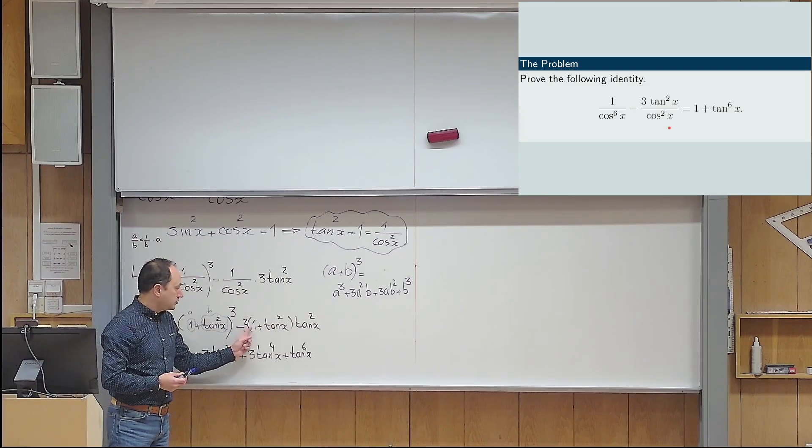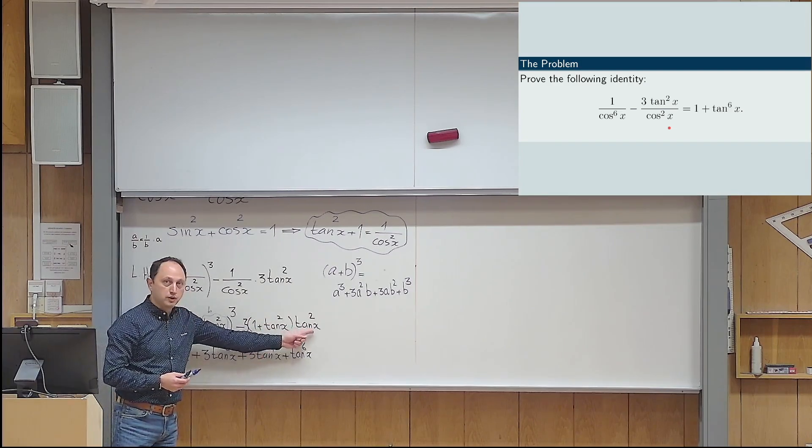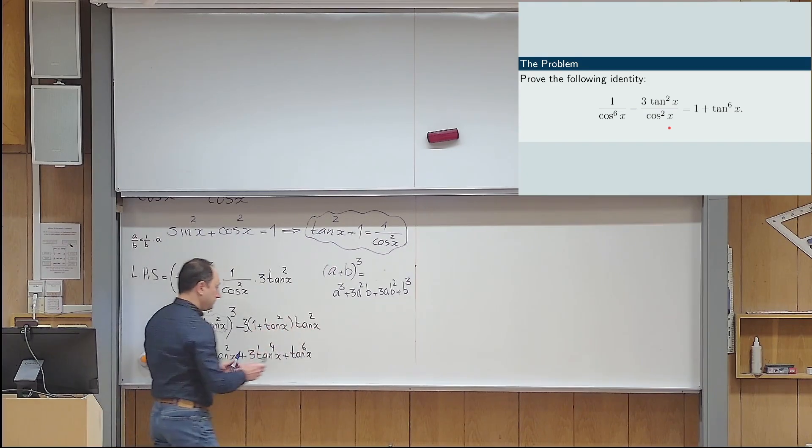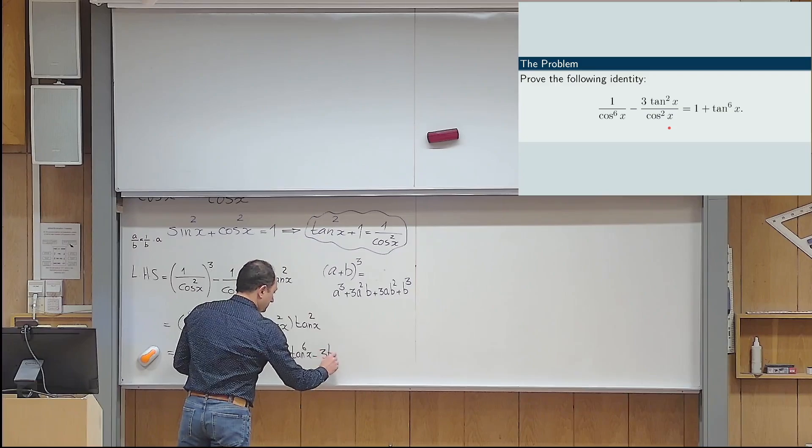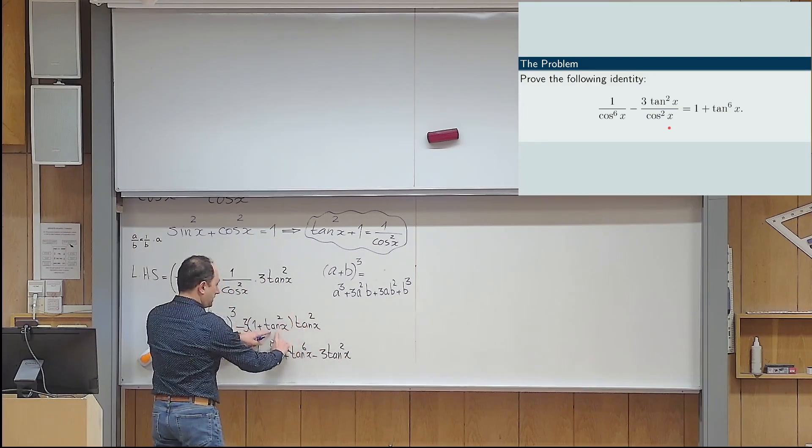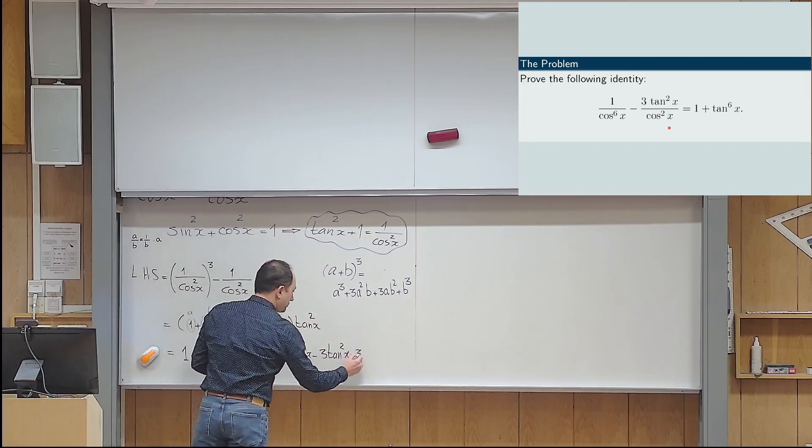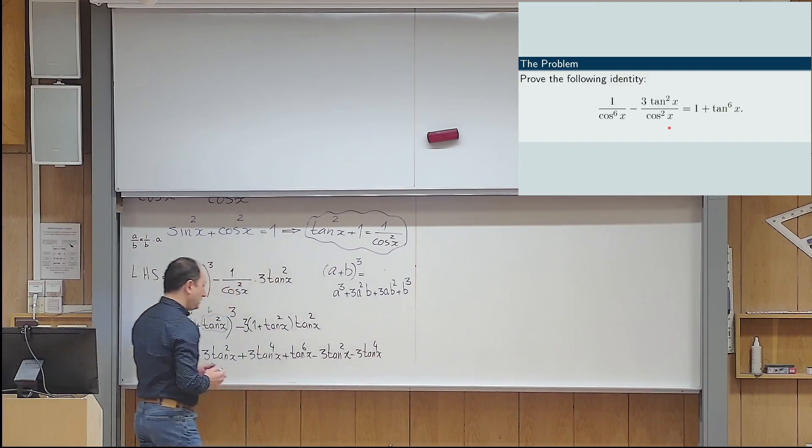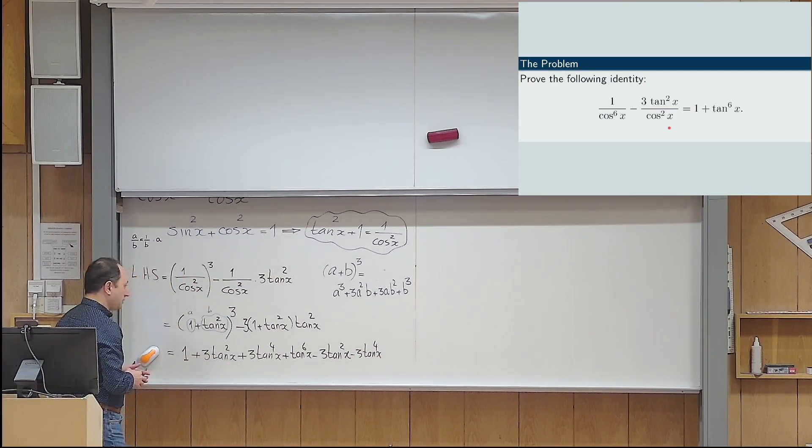So, I multiply a minus 3 from the left and a tan x squared from the right. Then I will get minus 3 tan x squared. And then I multiply these in. So, this becomes minus 3 tan x to the power of 4.